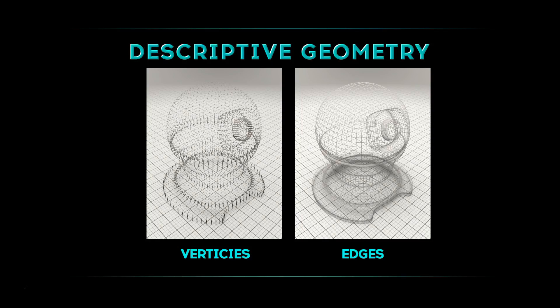Descriptive geometry is the beginning of creating three-dimensional objects. In the early days of 3D, the first thing they were able to do was calculate vertices — points in three-dimensional space — which is basically what descriptive geometry is. People tend to look at a model and think in terms of polygons, but to the computer it's really all about a collection of vertices.